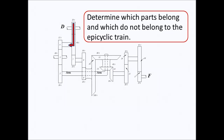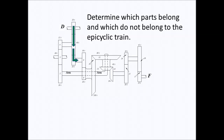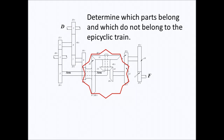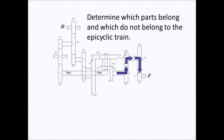We have Train 1 which we have to analyze separately, and we also have Train 2 which we have to analyze separately. After that we can proceed with the analysis of the epicyclic bevel train component of the whole mechanism. The output results will then be used to determine the revolution of F.